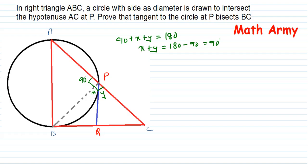From point B, I have drawn a dotted line up to P. Now focus on Q — Q is an external point from which two tangents are drawn: one from Q to B and the second from Q to P. From an external point, the tangents drawn to a circle are always equal. So by this theorem, BQ is equal to QP.